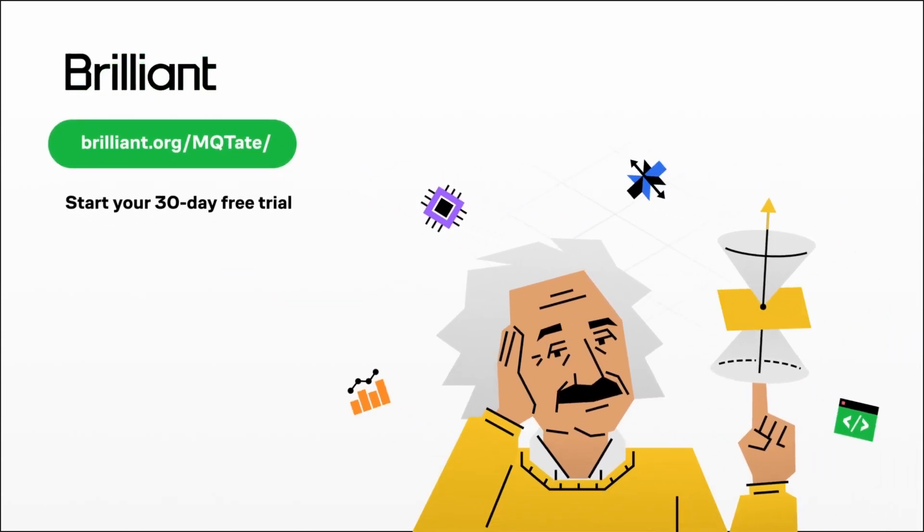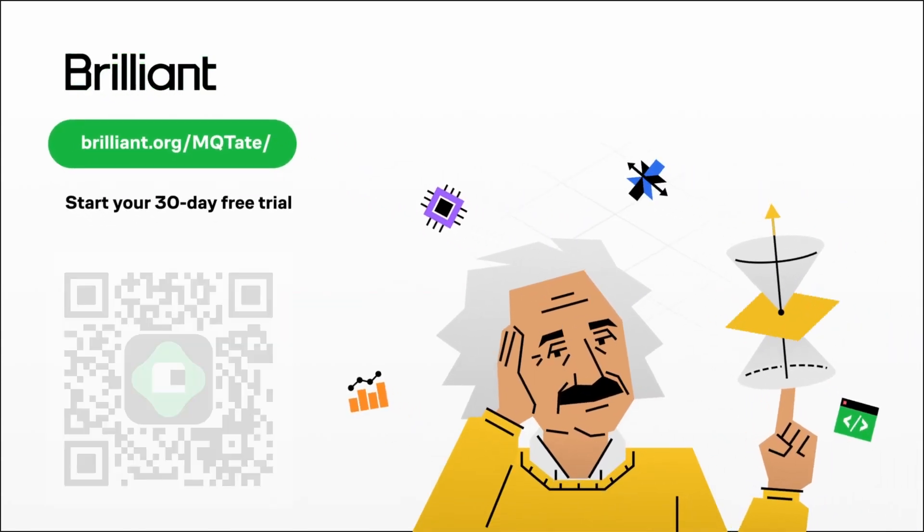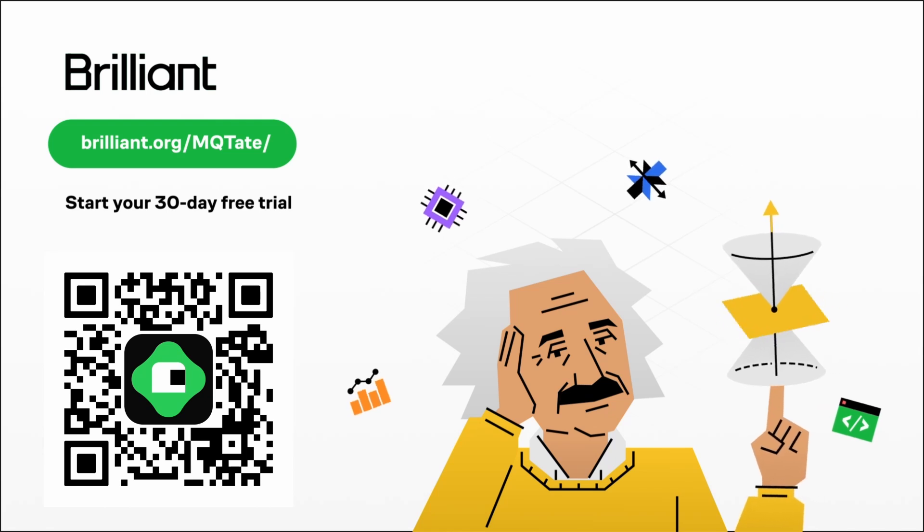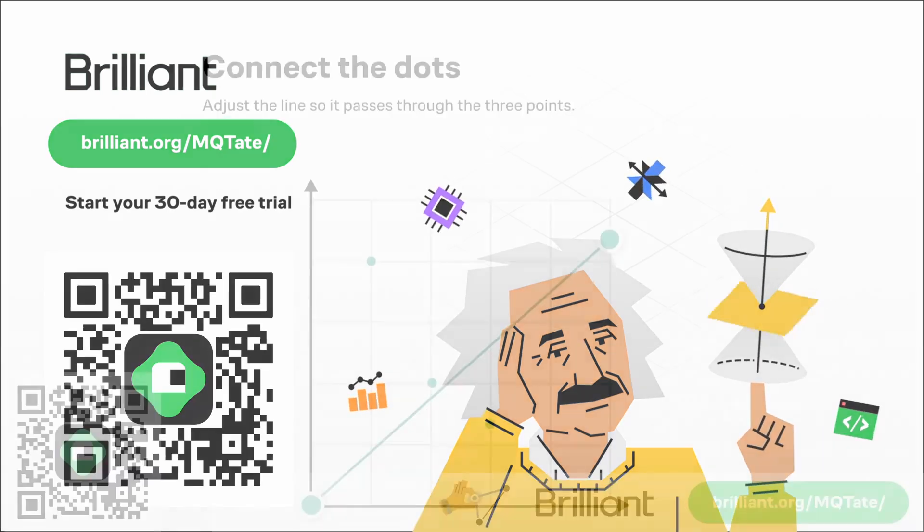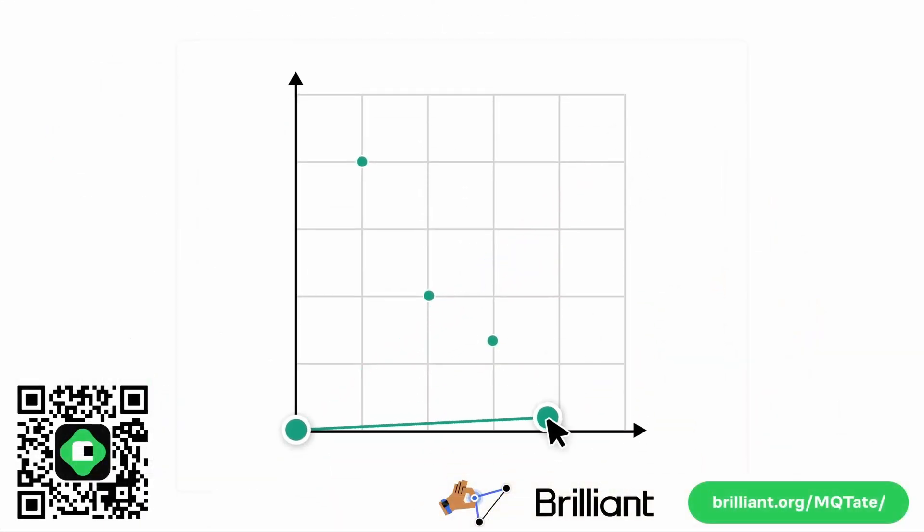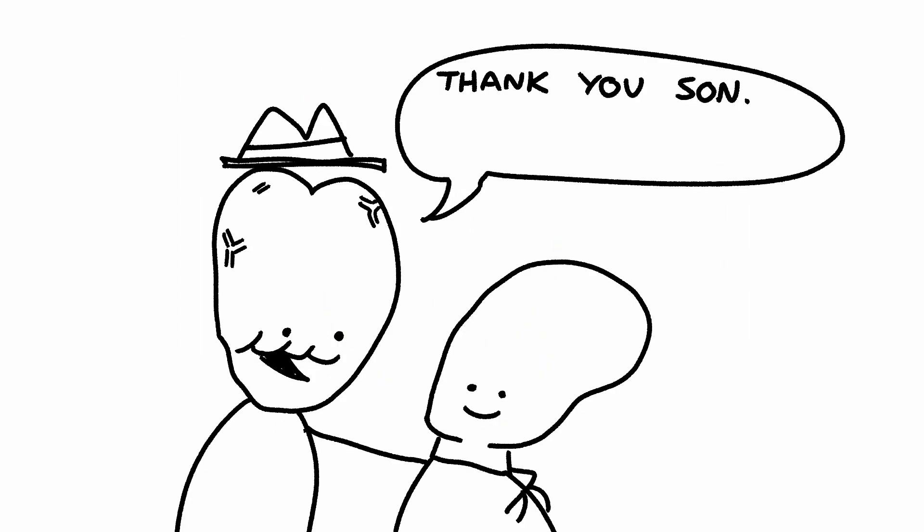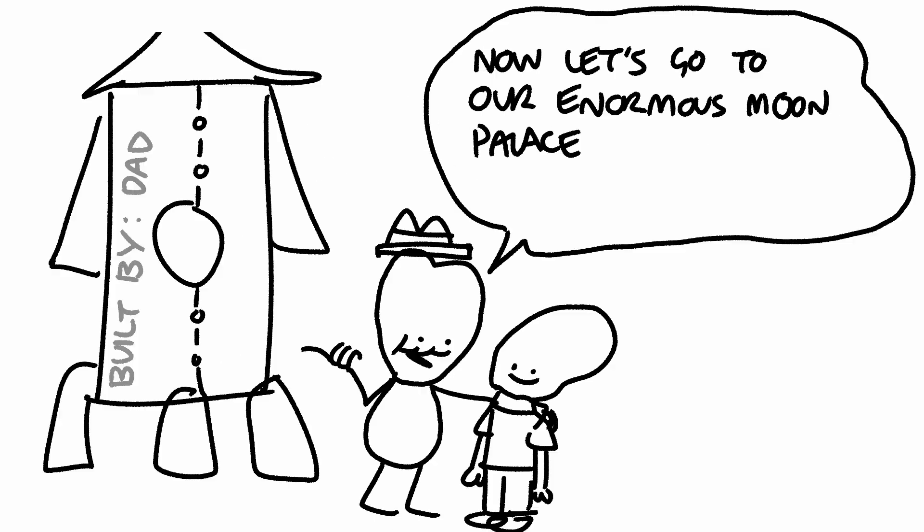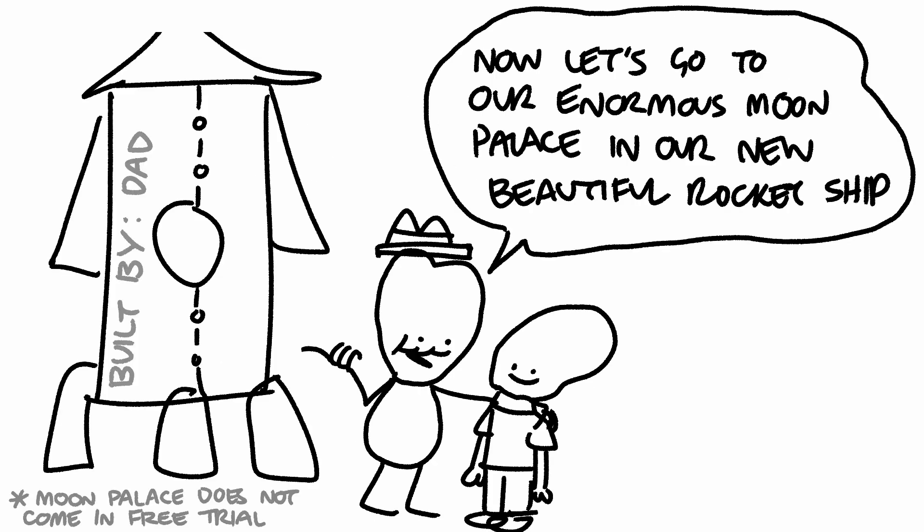Oh, father, do I have news for you. By visiting brilliant.org/mqtate or scanning the QR code on screen, you get a full 30 days completely free. If you want to help Brilliant keep supporting independent animation on YouTube, you can also get an annual subscription for 20% off. Thank you, son. I feel smarter already. Now let's go to our enormous moon palace in our new beautiful rocket ship.